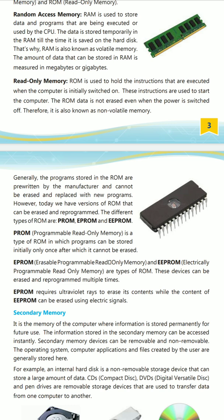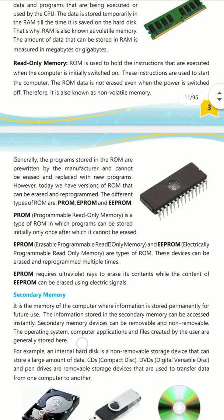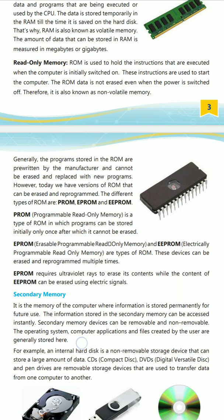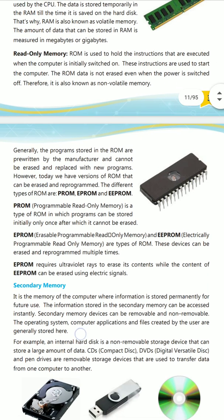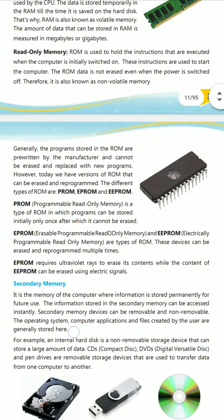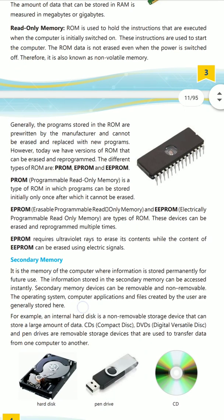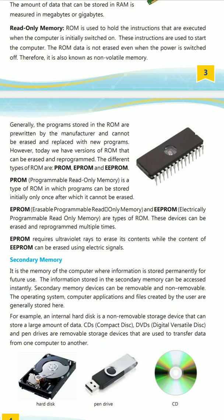The different ROM types are PROM, EPROM, and EEPROM. PROM (Programmable Read Only Memory) is a type of ROM where programs can be stored only once and cannot be erased. EPROM stands for Erasable Programmable Read Only Memory, and EEPROM stands for Electrically Erasable Programmable Read Only Memory. EPROM and EEPROM can be erased and reprogrammed multiple times. EPROM requires ultraviolet light to erase its content, while EEPROM uses electronic signals to erase or rewrite data.